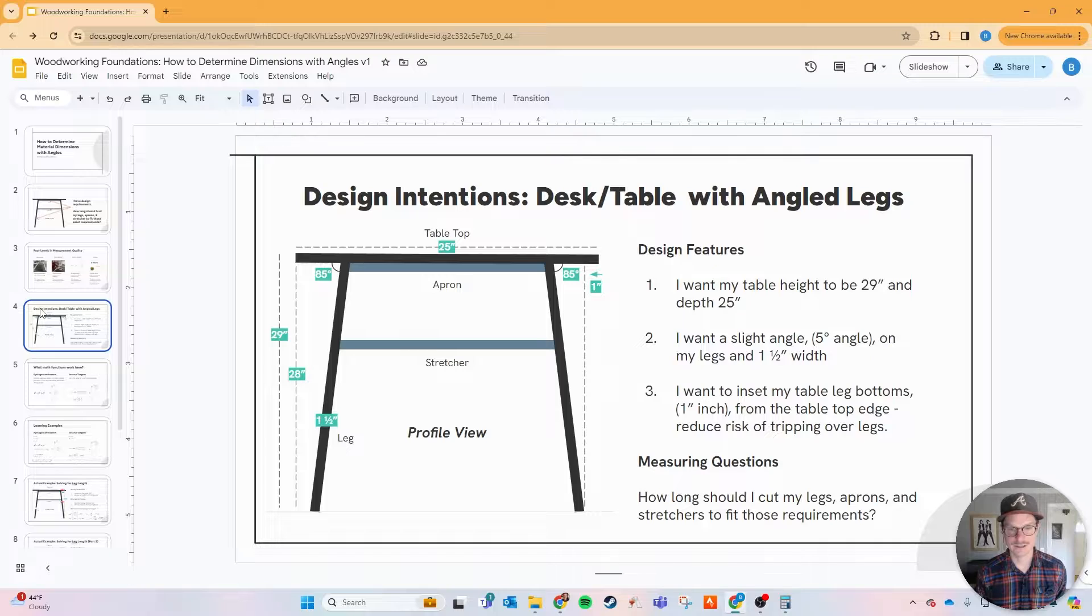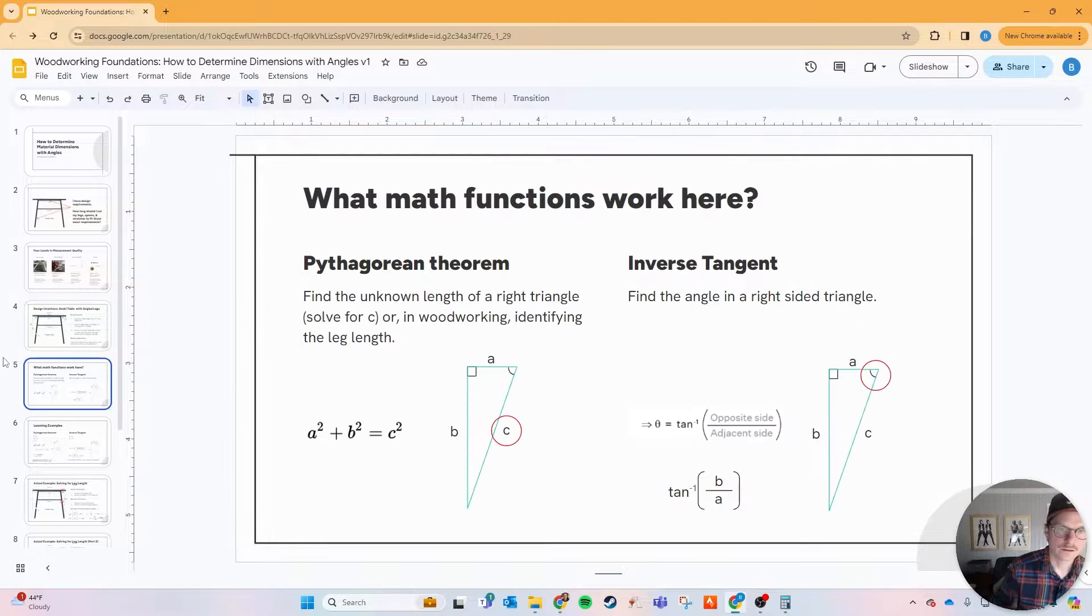The other component is that I wanted the inset of my table legs at the bottom to be one inch from the table top edge. My thought here was that as you walk around your desk you don't want those legs to be at the same width or even further out because you'll run the risk of tripping over them. The biggest questions of all this is how long should I cut those legs, the aprons, and the stretchers to fit exactly those requirements rather than just guessing.